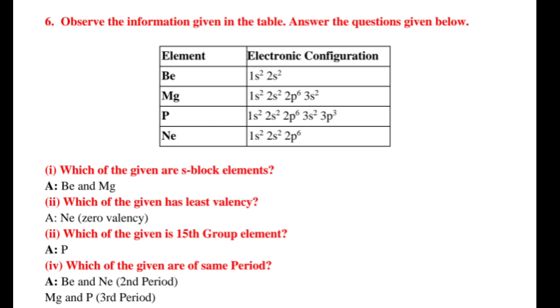2. Which of the given has least valency? Answer: Ne, zero valency. 3. Which of the given is the 15th group element? Answer: P. 4. Which of the given are of the same period? Answer: Be and Ne, second period. Mg and P, third period.